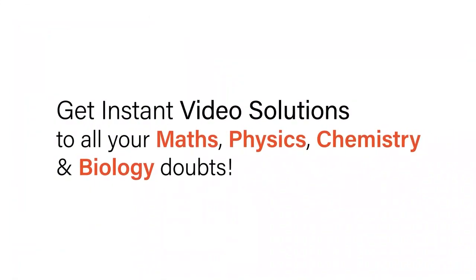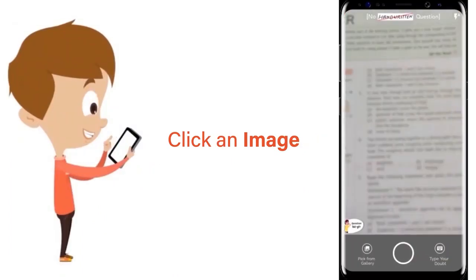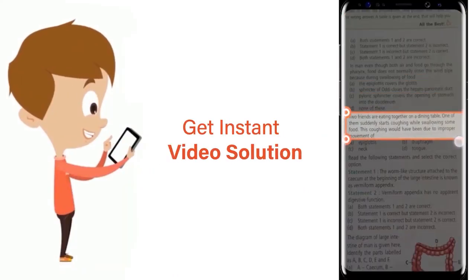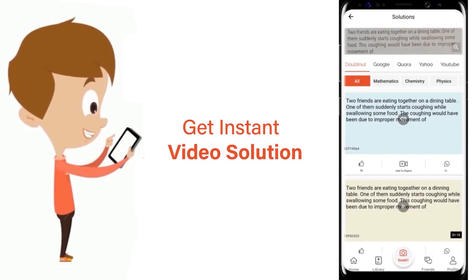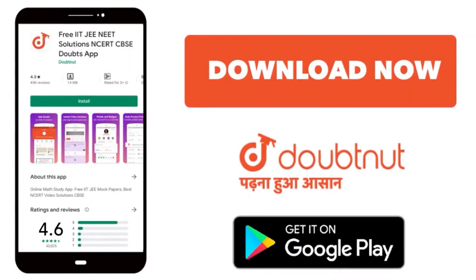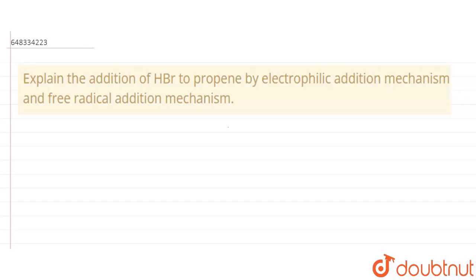With DoubtNet, get instant video solutions to all your maths, physics, chemistry, and biology doubts. Just click the image of the question, crop it, and get an instant video solution. Download the DoubtNet app today. Hello everyone. The question says: explain the addition of HBr to propene by electrophilic addition mechanism and free radical addition mechanism.